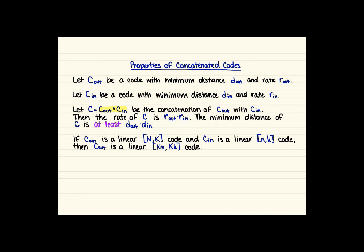And then the minimum distance is at least the product of the individual code's minimum distances. So it's at least that big, it could be bigger. So we can easily say something about the minimum distance, and we know what the rate of the code is.